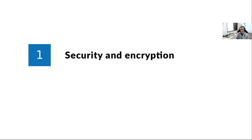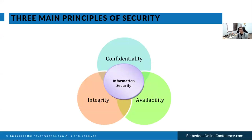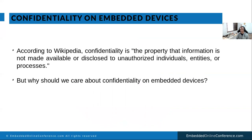Let's start with a quick introduction to security and encryption. This is a popular image representing the three main principles of security: confidentiality, integrity, and availability. When we think about encryption we are really talking about protecting confidentiality. According to Wikipedia, confidentiality is the property where information is not made available to unauthorized individuals, persons, systems, or entities.